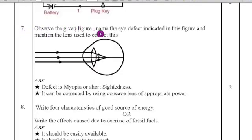Seventh question, observe the given figure. Name the eye defect indicated in this figure and mention the lens used to correct this. We have to find out which type of disease and which lens is going to use to correct the disease. The first one is the defect is myopia or short sightedness. It can be corrected by using concave lens of appropriate power.